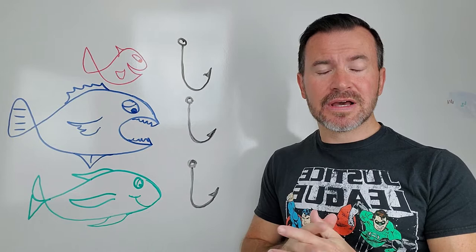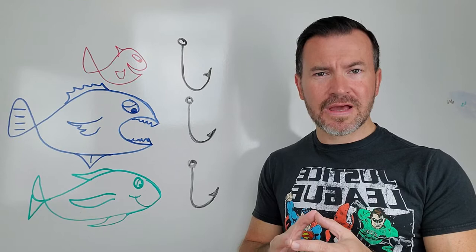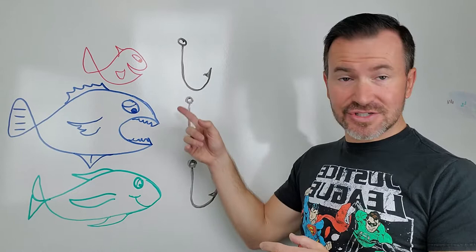So people try to build out pages and structure their website trying to be all things to all people and they end up being nobody to no one. Let me explain. If you can see these three fish behind me, different fish like different type of bait, right?